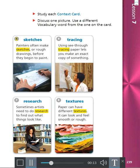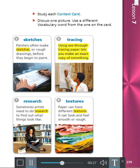5. Sketches: Painters often make sketches, or rough drawings, before they begin to paint. 6. Tracing: Using see-through tracing paper lets you make an exact copy of something. 7. Research: Sometimes artists need to do research to find out what things look like.